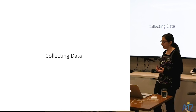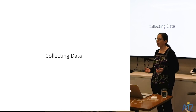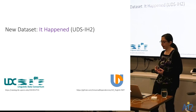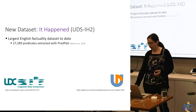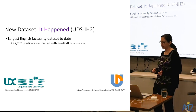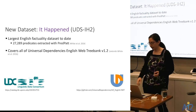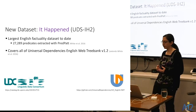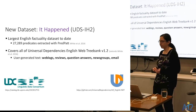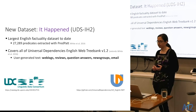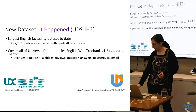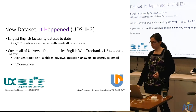To train an event factuality prediction system, we need to collect data. I collected a dataset called It Happened — the largest English event factuality dataset to date, with about 27,000 annotated predicates. It covers the entirety of the Universal Dependencies English Web Treebank version 1.2. The text includes various genres such as blogs, reviews, question-answers, newsgroups, and email, covering about 17,000 sentences.